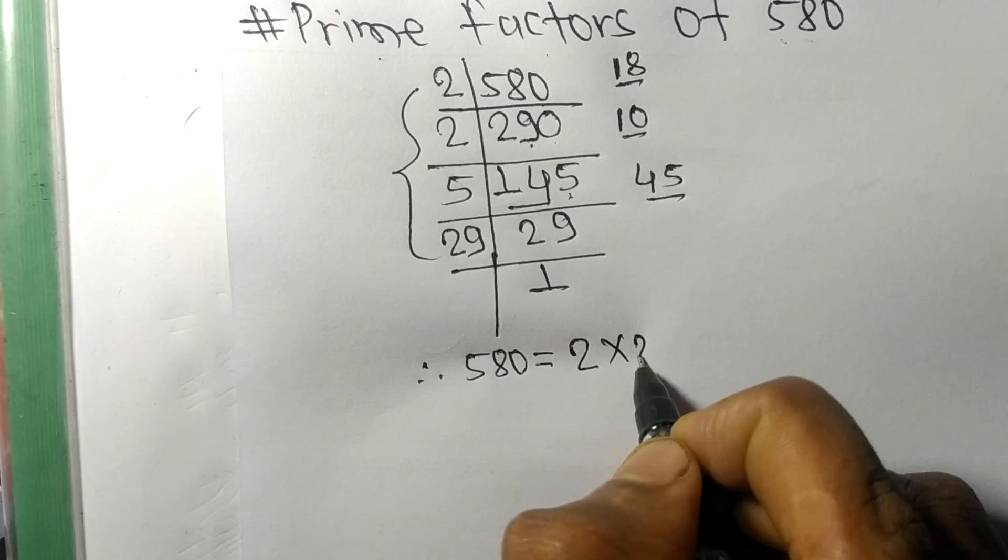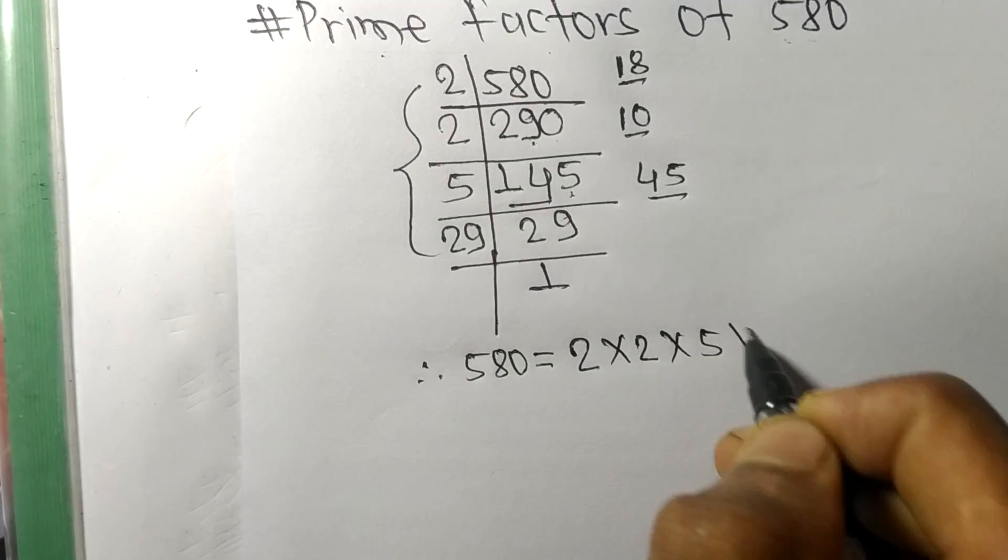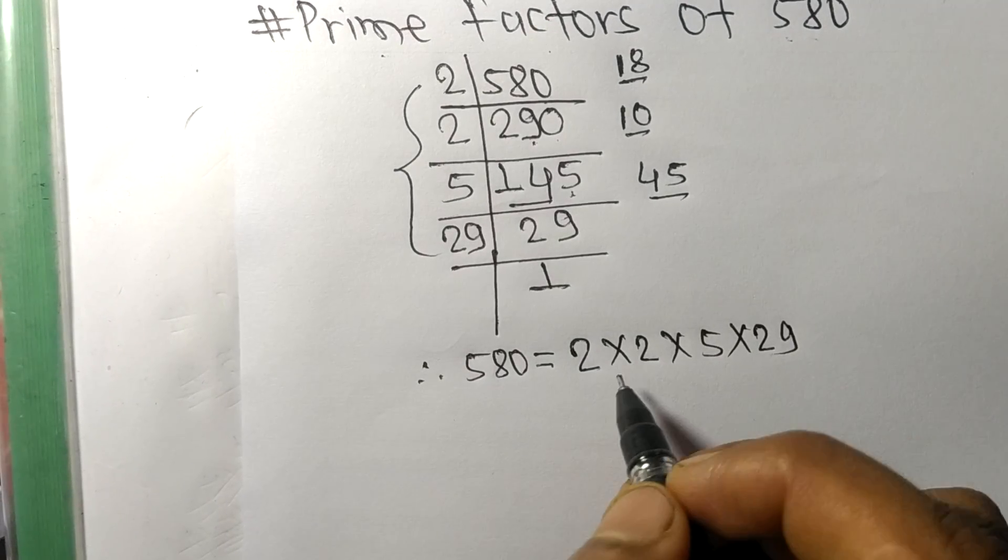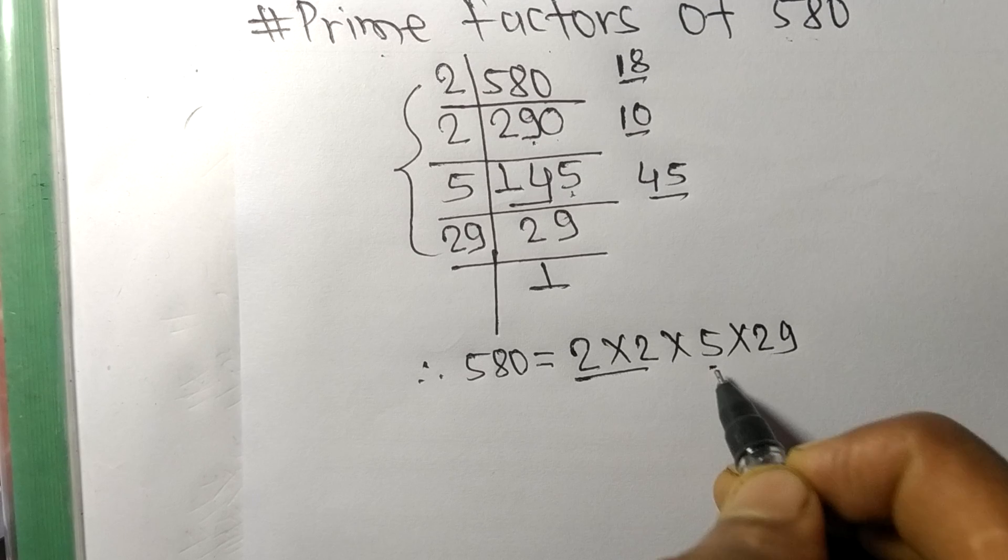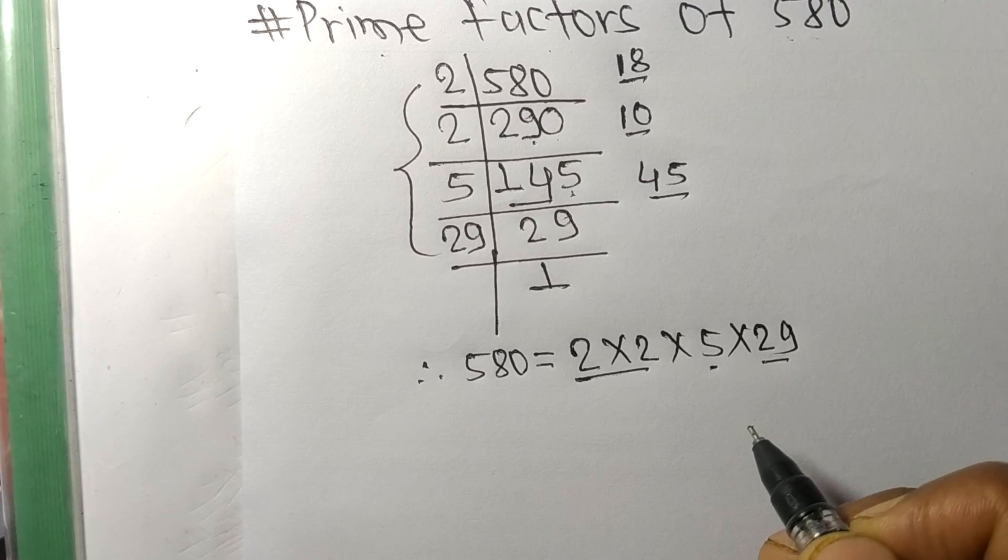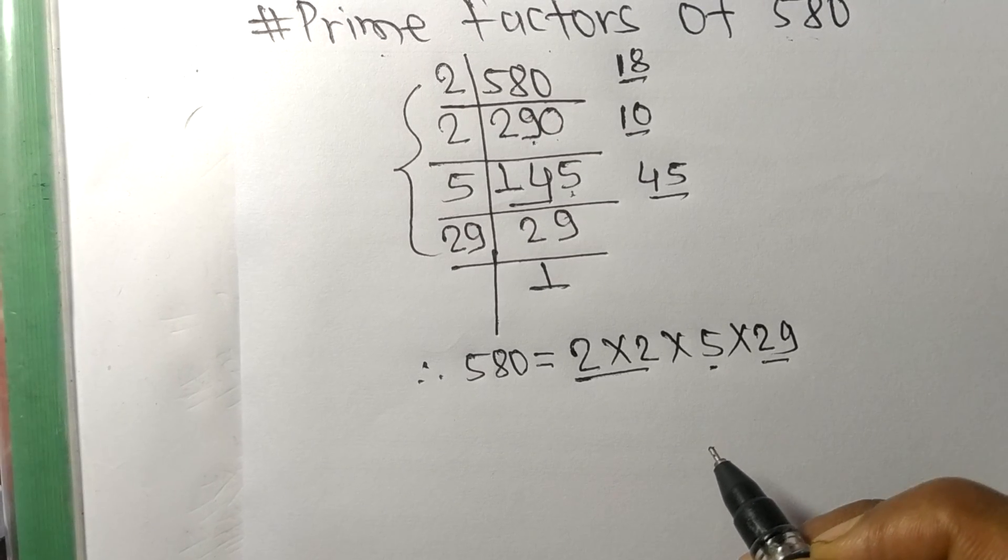we have 2 × 2 × 5 × 29. So 2, 5, and 29 are the prime factors of 580.